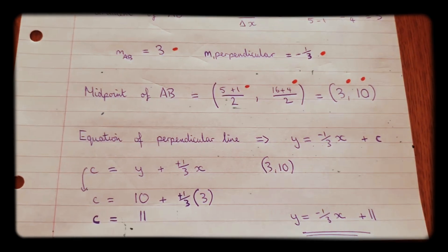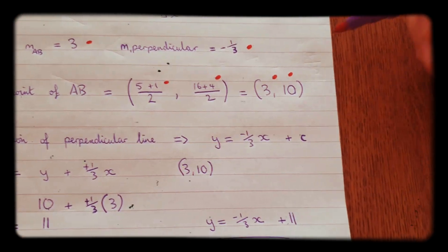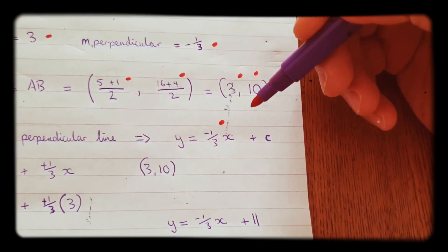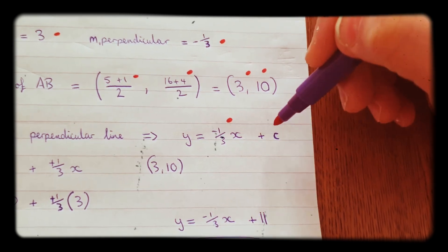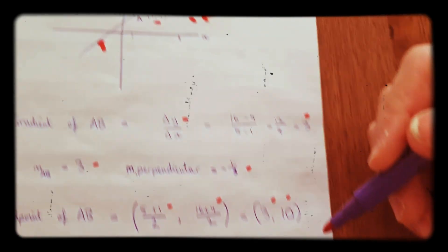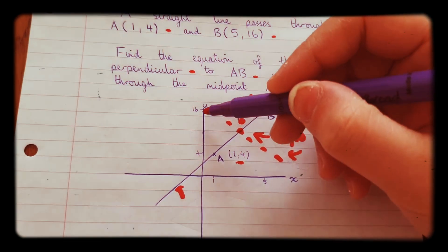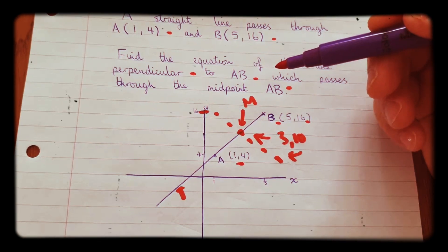Now, the equation of the perpendicular line is going to be Y equals minus 1 third X plus C, because that's the gradient. We need to figure out what C is. The C is where it cuts the Y axis.